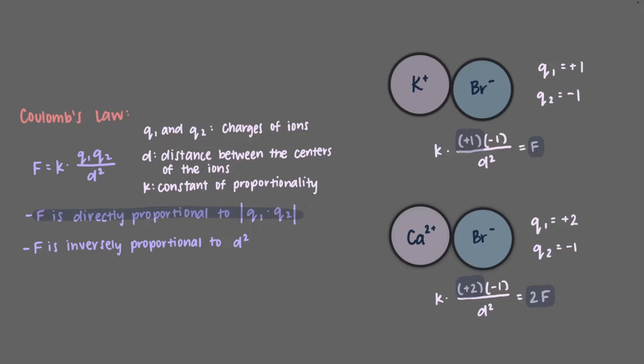So, if we replace the plus one charge of the potassium ion with the plus two charge of the calcium ion in the numerator of the equation, the electric force will double. The strength of the attraction between calcium and bromide is twice as strong as the force of attraction between potassium and bromide.